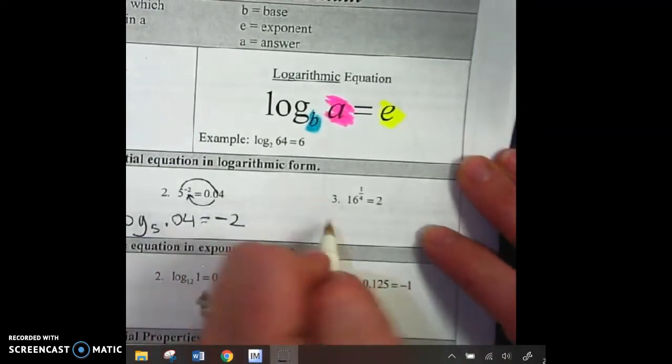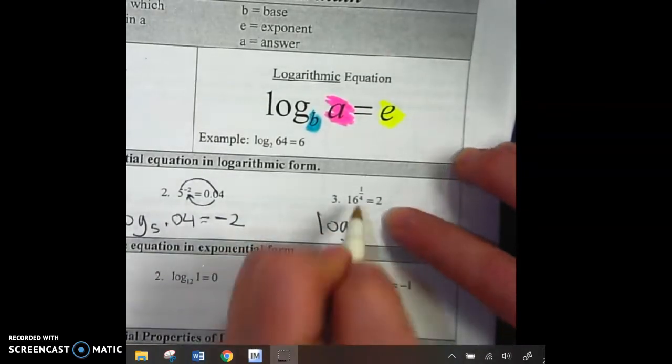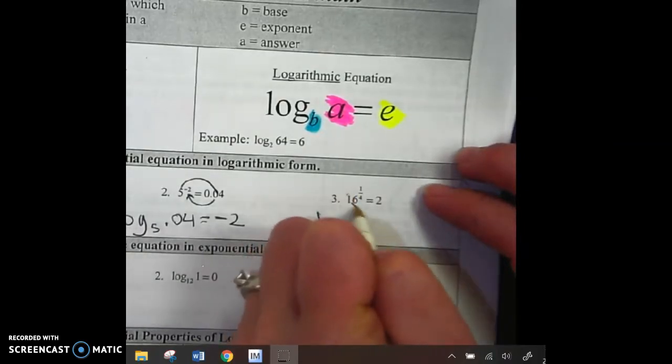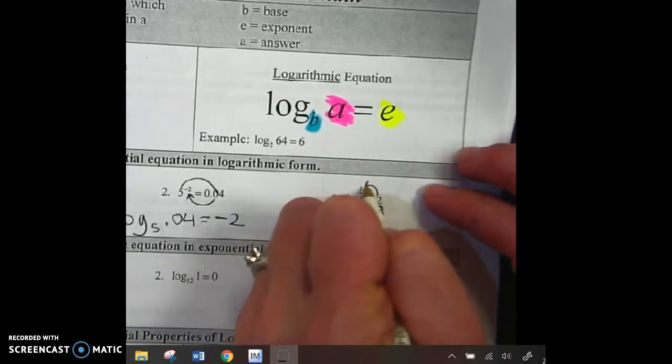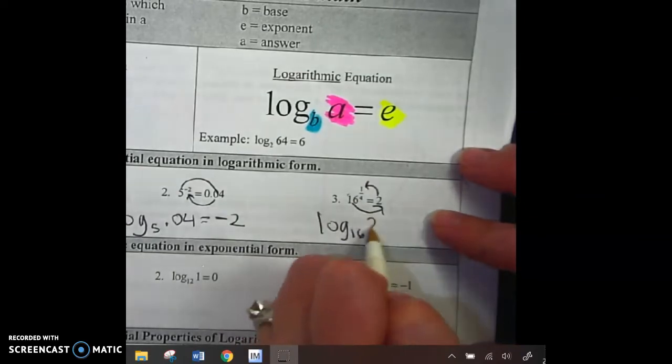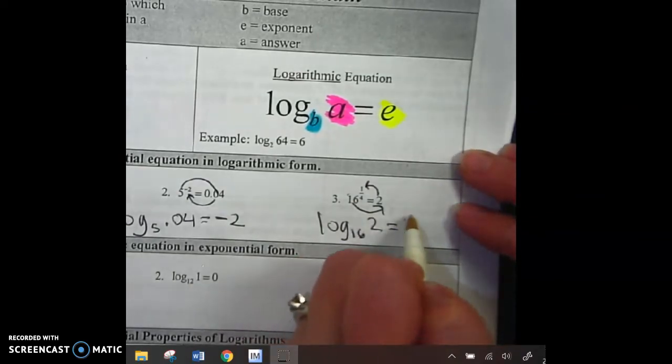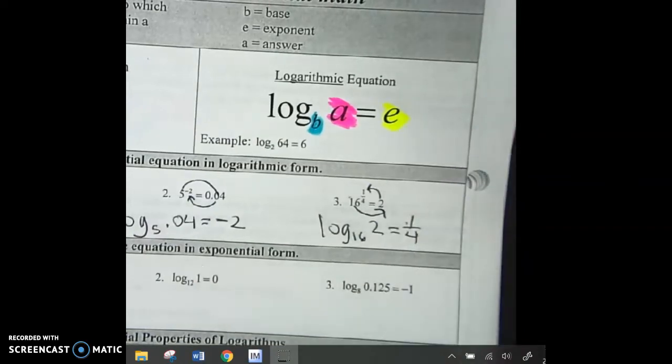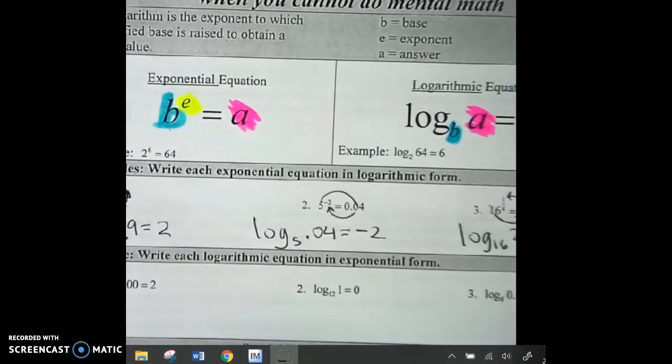Next one. Log is the first thing I write. What's the base? 16. We're making a circle. I guess I could have made the circle like this, too. Either way, it's making a circle. Normal size 2, equals normal size 1 fourth. So, all you're doing right now is just changing it from exponential form to logarithmic form.